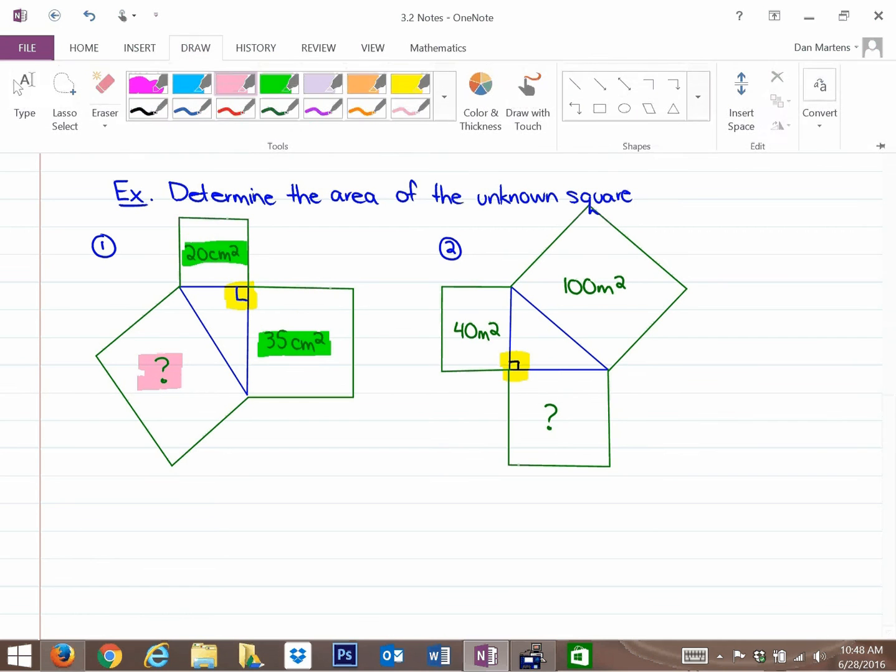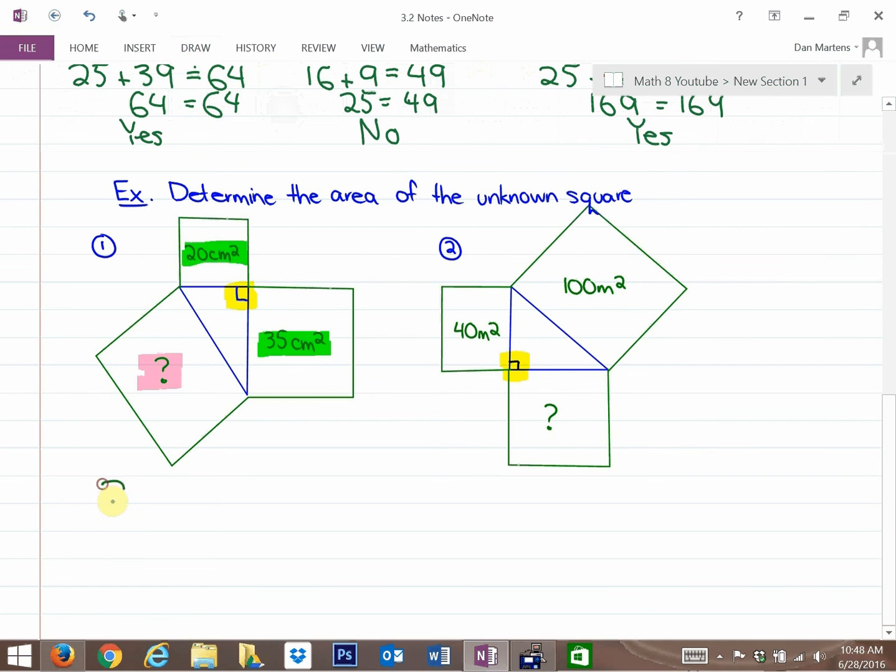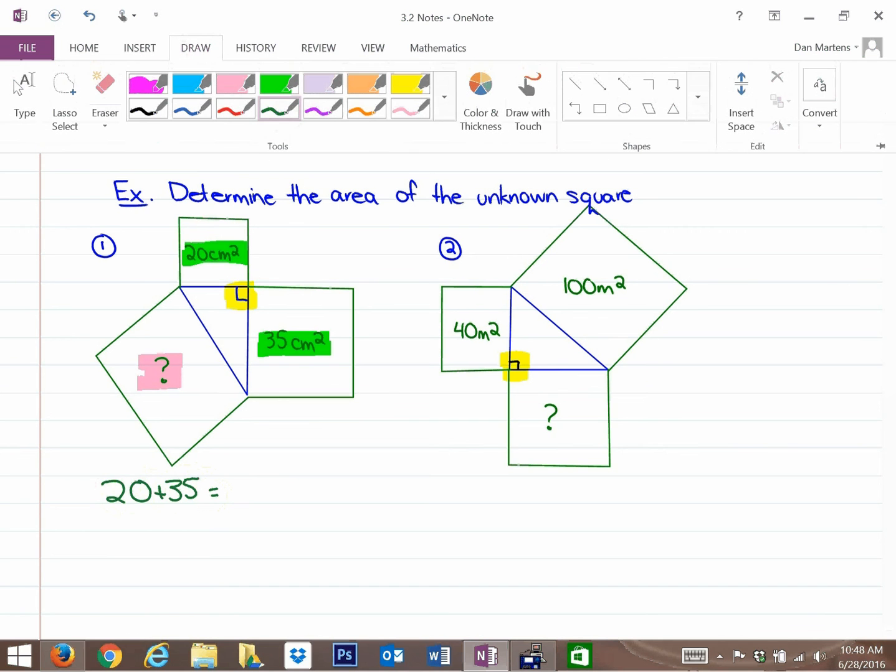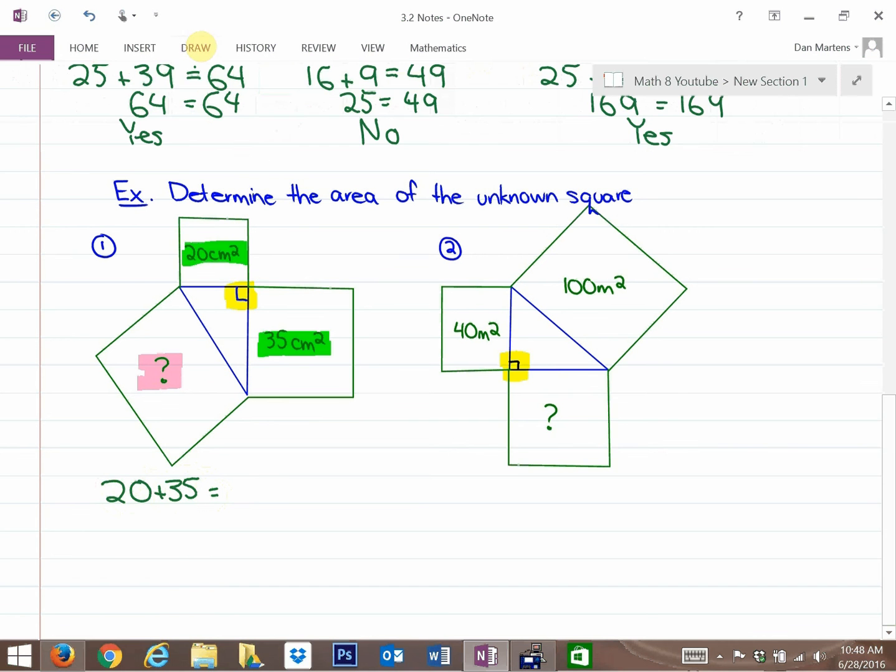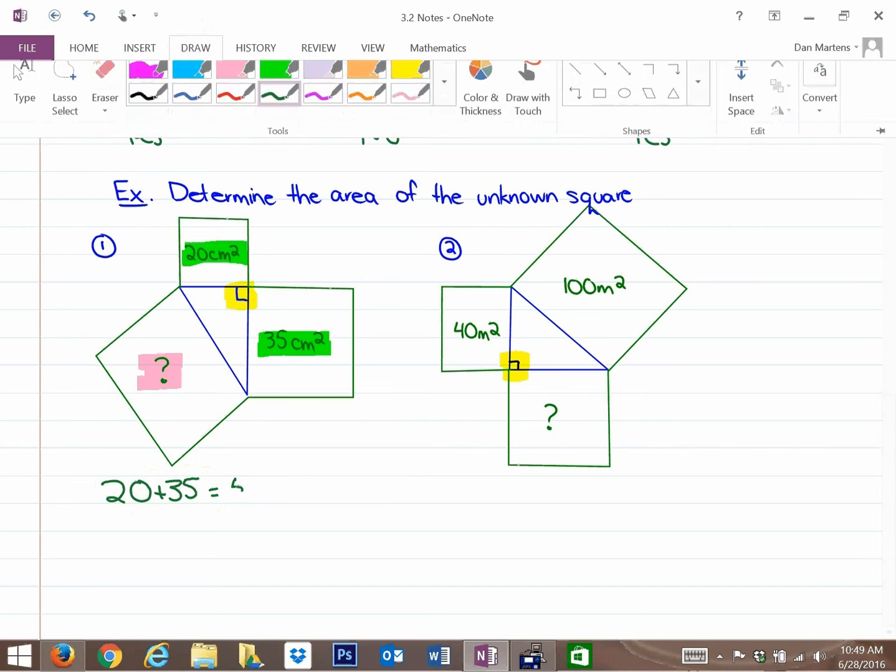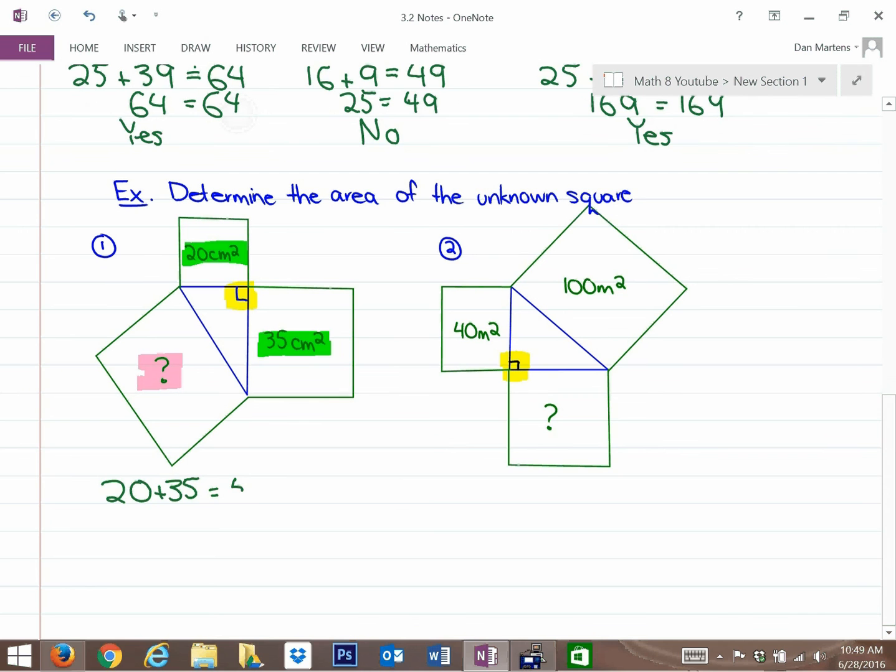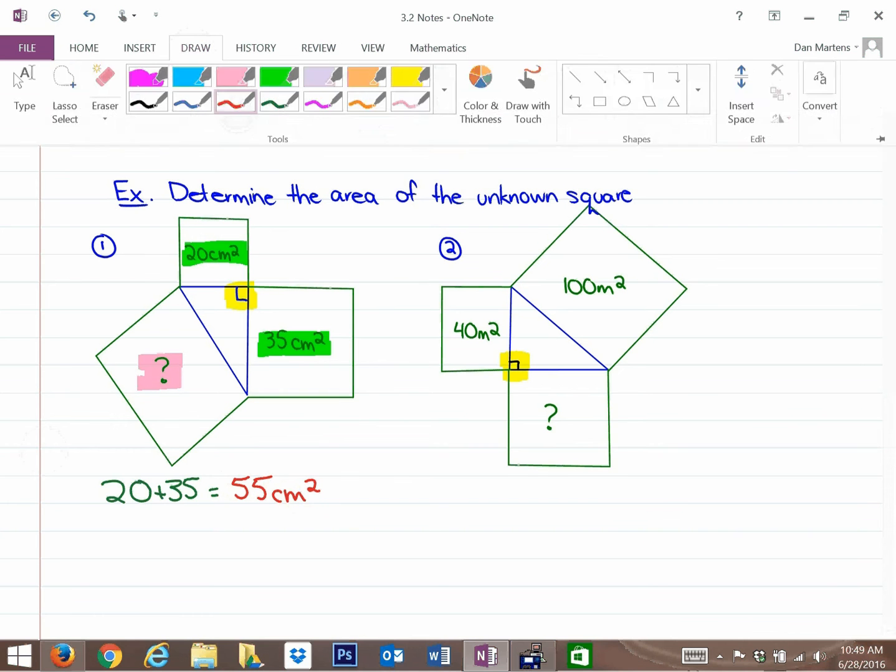We know that these areas have to add up to the large area. So in this particular case, that large area is just going to be 20 plus 35. And that's going to equal the large area, which is 55 centimeters squared. And that's the answer to that big area.